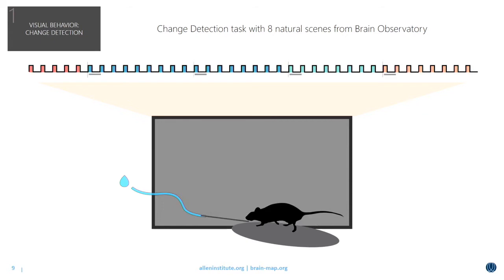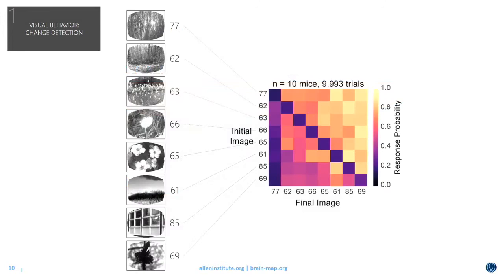If you analyze all 64 possible transitions between these eight natural scenes, the animals perform quite well, showing a high probability of responding when the stimulus changes — with some changes being more difficult than others. For instance, a change to image 69, regardless of the initial image, is relatively easy for the mice, whereas a change to image 77 is much more difficult. The animals also exhibit a low probability of responding when the image doesn't change. Combining these transition types with the animal's response — lick or no lick — gives four basic trial types.